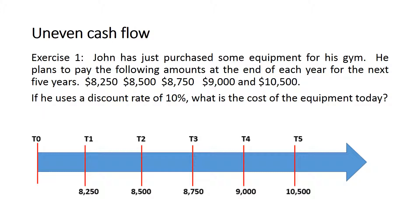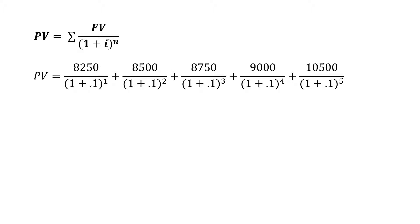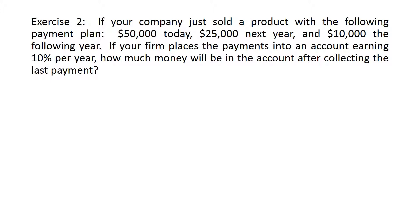We know that the discount rate is 10%, so we will use the present value equation and plug in the numbers, then find the summation, which is 33,765.59. This is our answer. You might want to take the answer of each cash flow separately and then find the summation, or put them all together as I did to get the summation.